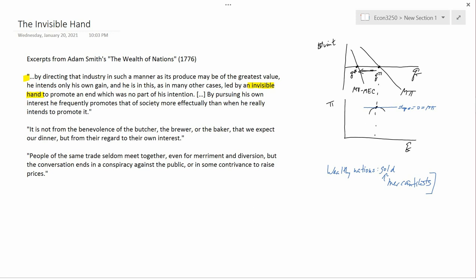By pursuing his own interests, he frequently promotes that of society more effectually than when he really intends to promote it. So this is the famous invisible hand quote. And what it's saying is that when a businessman just sits about to maximize his own individual kind of selfish profit, that what actually happens is he benefits all of society even though he doesn't intend to benefit anybody but himself. So he's led by an invisible hand to benefit society. So what's good for the business is good for society.